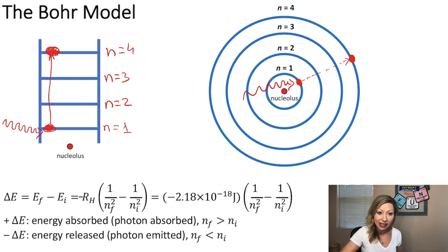And when it does, it can go, for example, to N equals 3, N equals 2, or back to N equals 1, so back to the ground state.